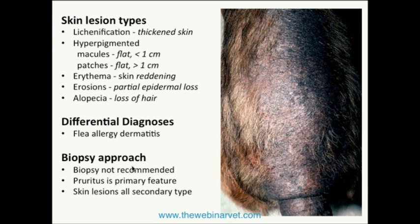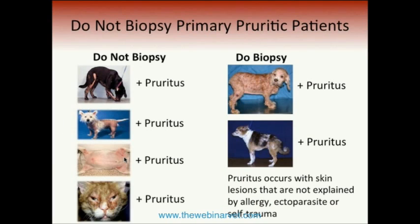In this patient, all of the skin lesions are considered secondary. Lichenification is always a secondary skin lesion as a result of chronicity; hyperpigmentation equally so. Erythema, erosions, and alopecia might be primary or secondary, but in this pruritic patient with early onset, these are all secondary lesions. The biopsy results are quite predictable: eosinophilic perivascular dermatitis that's hyperplastic — which hasn't differentiated anything for our patient.